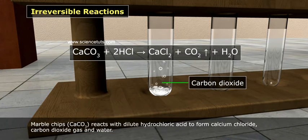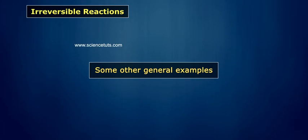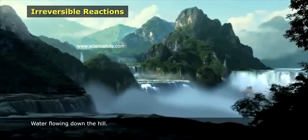CaCO3 plus 2HCl leads to CaCl2 plus CO2 plus H2O. Some other general examples are water flowing down the hill.